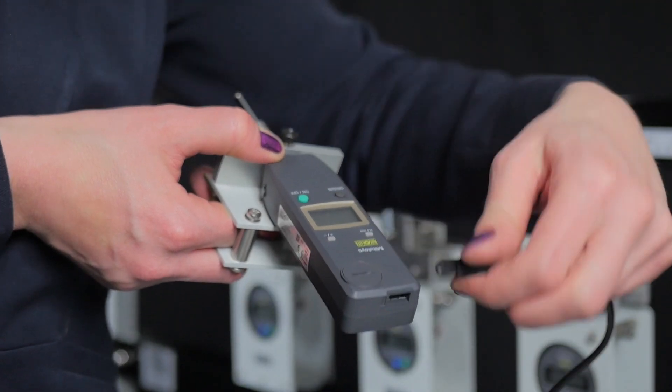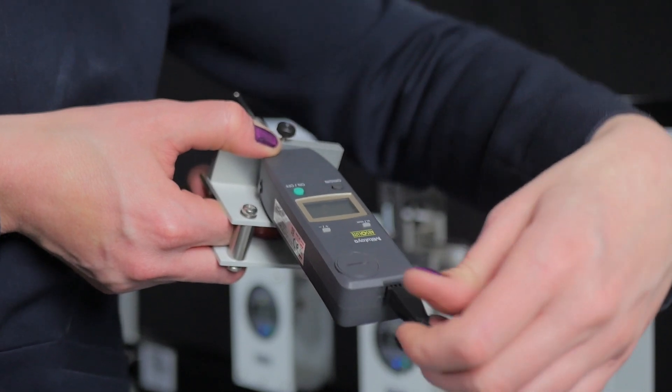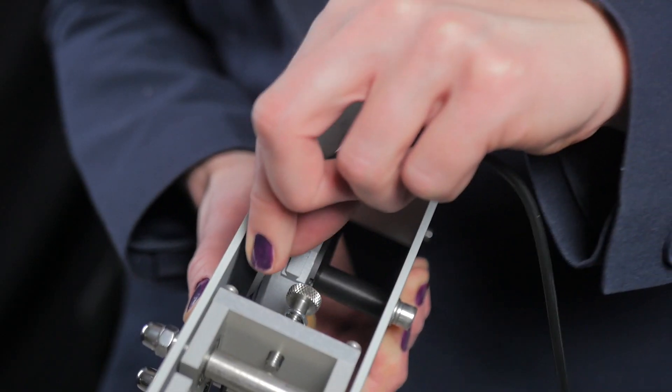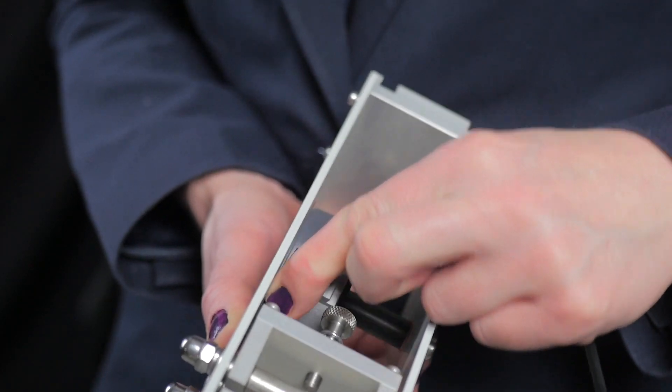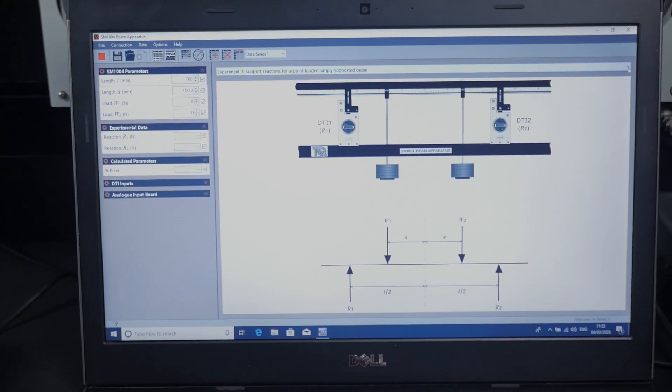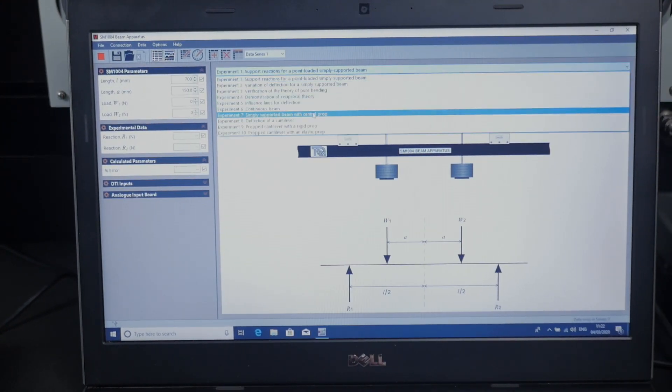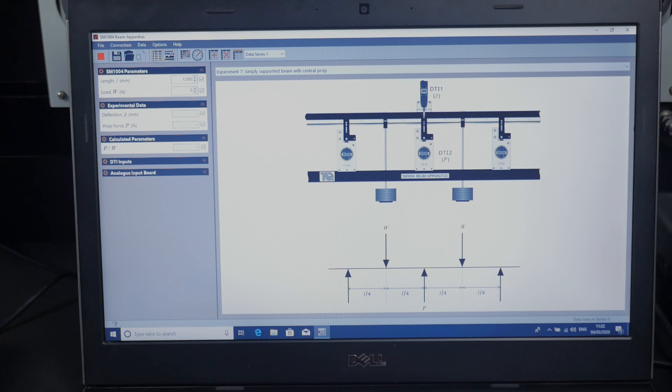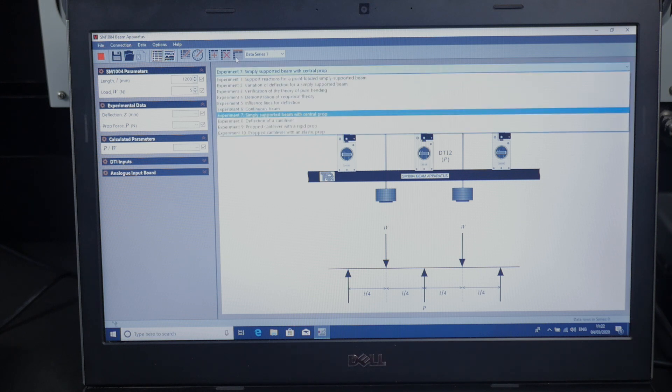You'll notice that all three digital indicators and the three load cells have sockets and cables for connection to Tech Equipment's optional versatile data acquisition system, VDAS, which further extends the learning outcome opportunities. With VDAS, not only can you take all the readings quickly to maximize lab time, but you can also chart the results and export them to Excel.